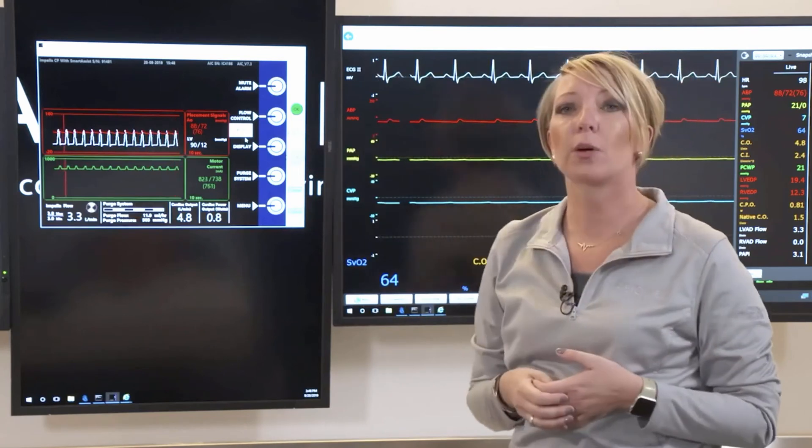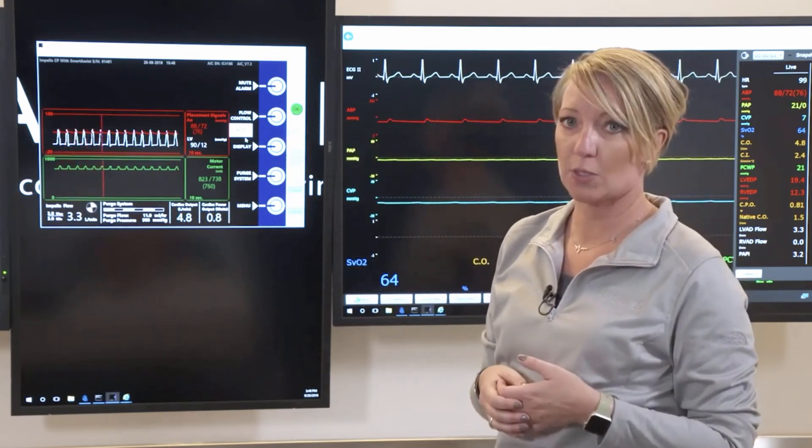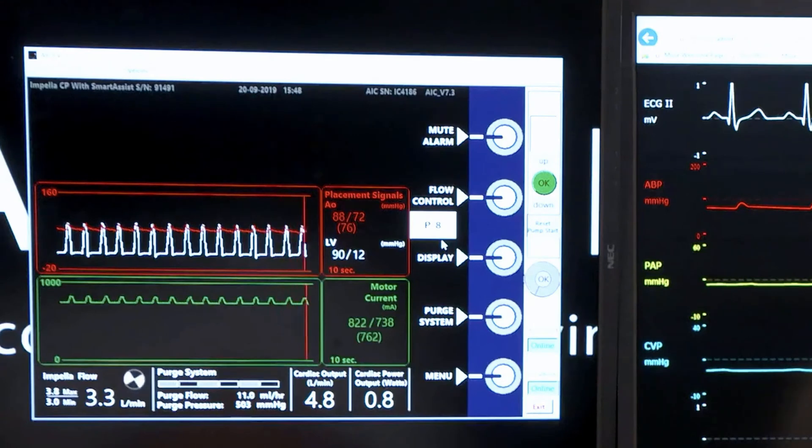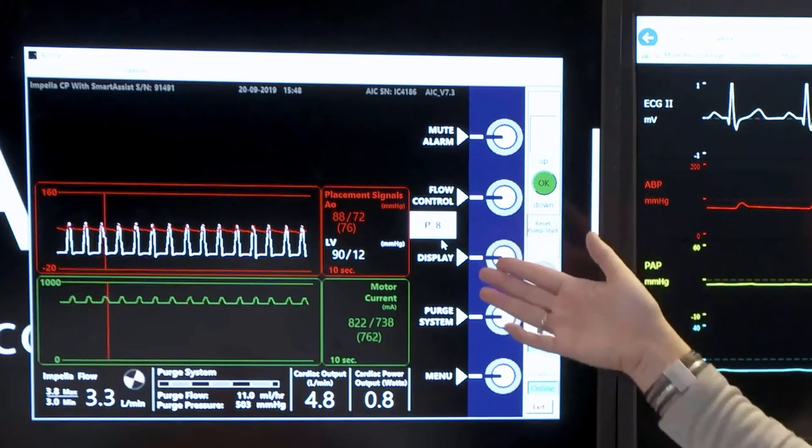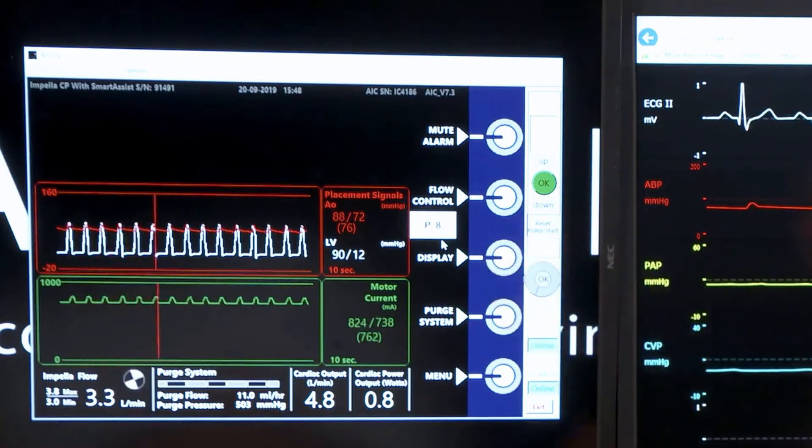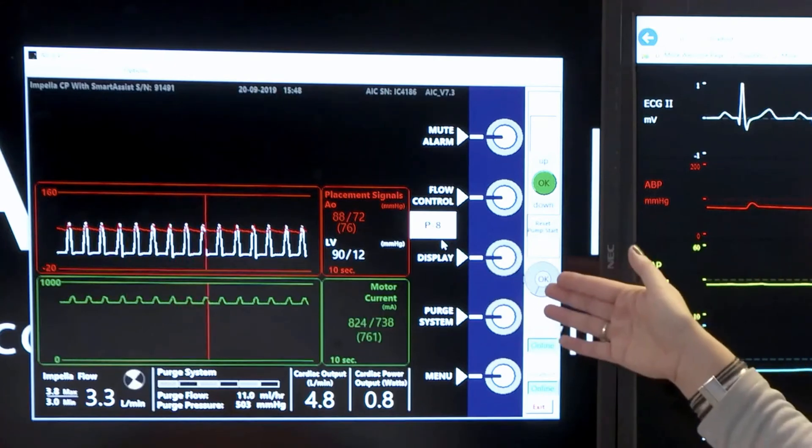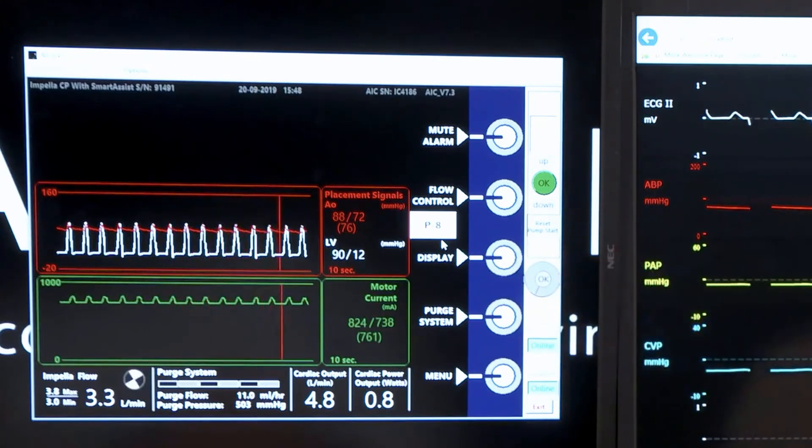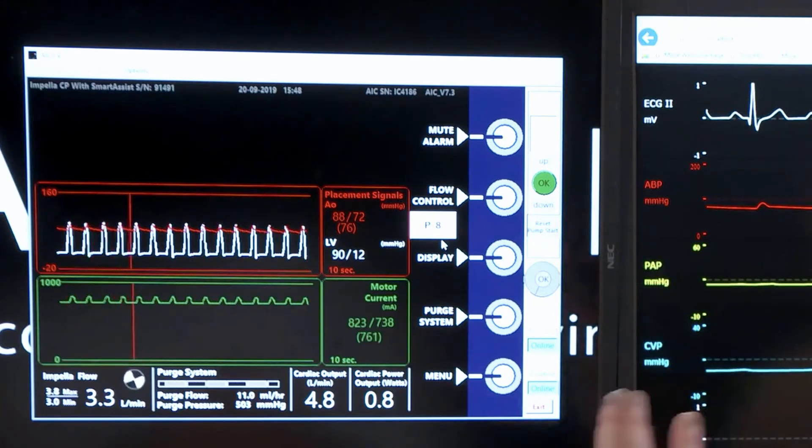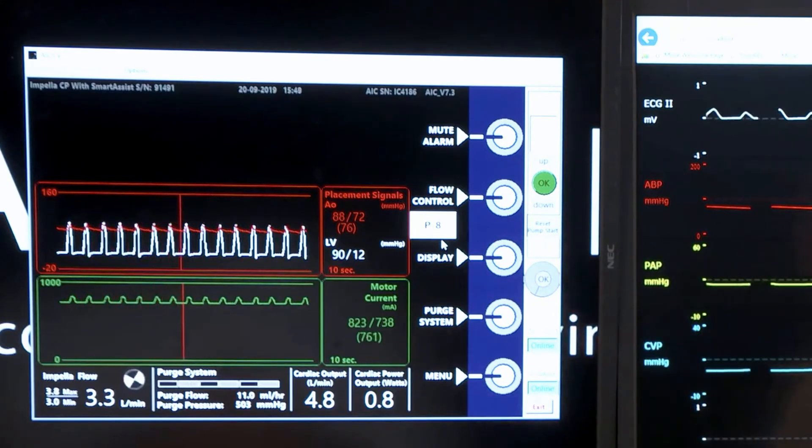Display is going to be anytime you want to change what you're looking at on the screen. 99% of the time you will have it on the placement screen, which is going to give us our placement signal and our motor current. But you could also use this display button if you wanted to look at your infusion history or show family the picture of where the Impella sits within the heart.